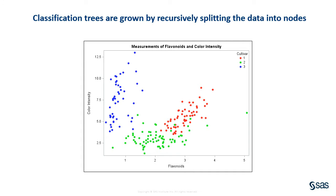The symbol colors identify the three cultivars. The first split selects a predictor and split point that minimize the variability across the child nodes. Here, the first split divides the root node into two child nodes, depending on whether the flavonoid content is less than or greater than 1.572. Node 1, the node on the left, contains all the blue points and some of the green points — in other words, all the samples from the third cultivar and some from the second.